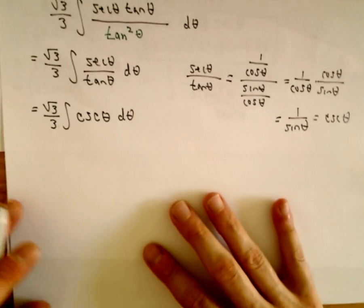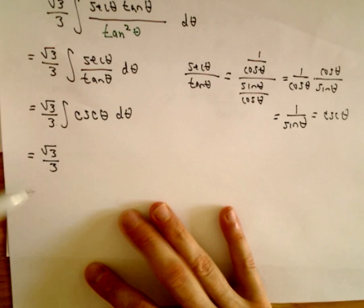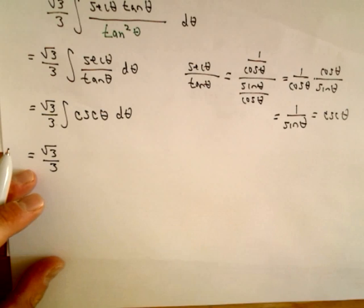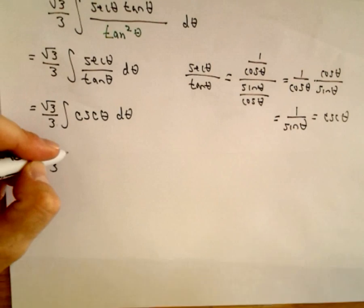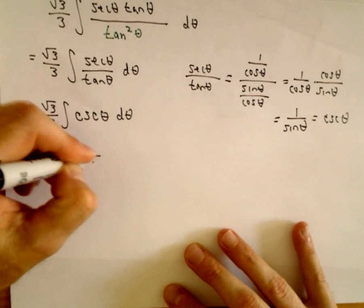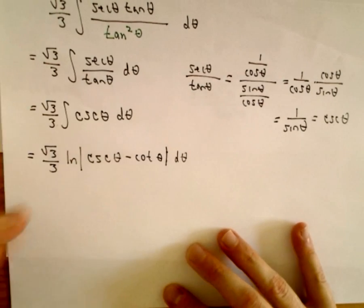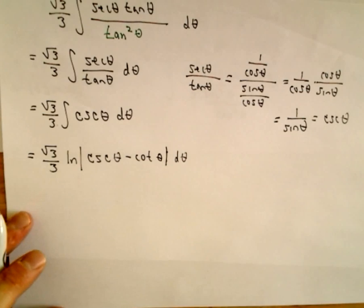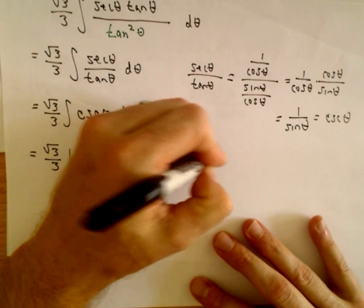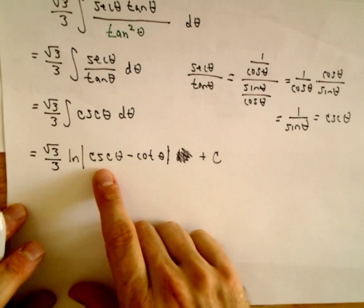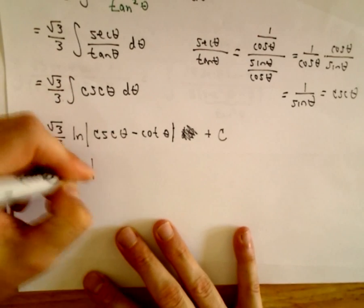So the integrand simplifies to cosecant theta — this is one of those functions where you want to have the antiderivative formula memorized. The antiderivative of cosecant theta is the natural logarithm of the absolute value of cosecant theta minus cotangent theta, plus C.